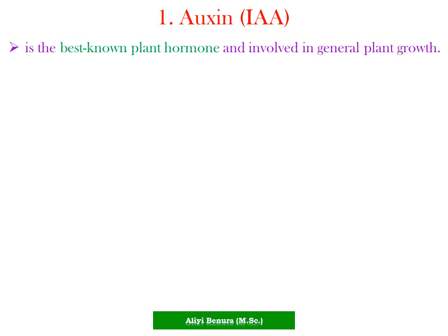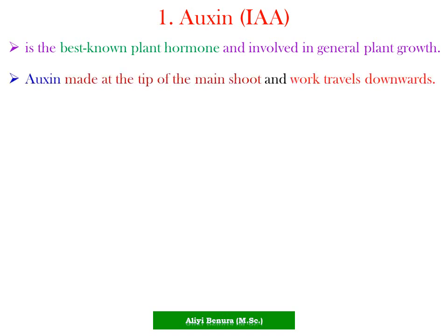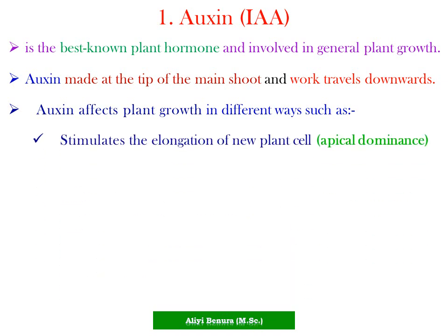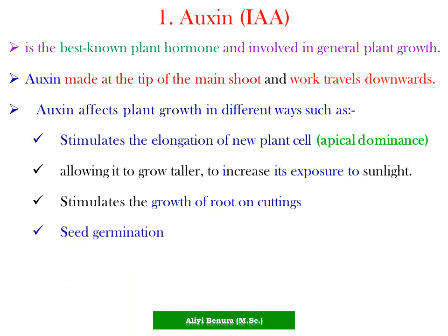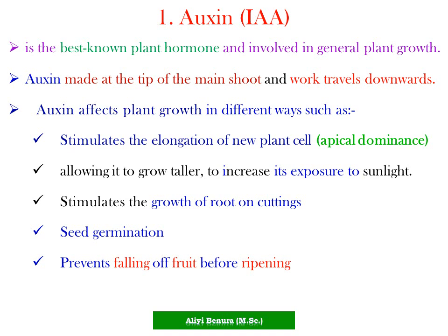Auxin is the best known plant hormone, involved in general plant growth in different ways such as stimulating the elongation of new plant stems, apical dominance at the tip, allowing the plant to grow taller and increase exposure to sunlight, stimulating the growth of roots on cuttings, and preventing the falling of fruit before ripening. The well-known example is indole-3-acetic acid, IAA.